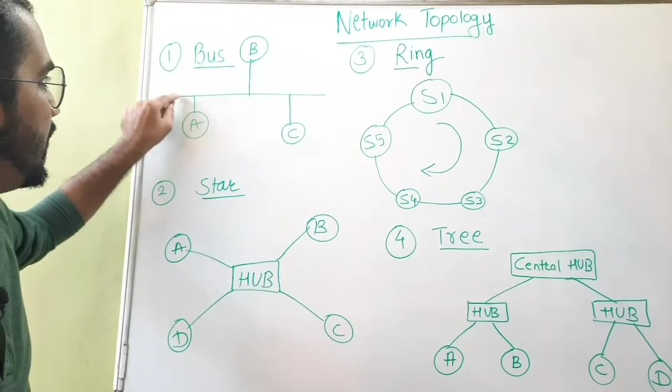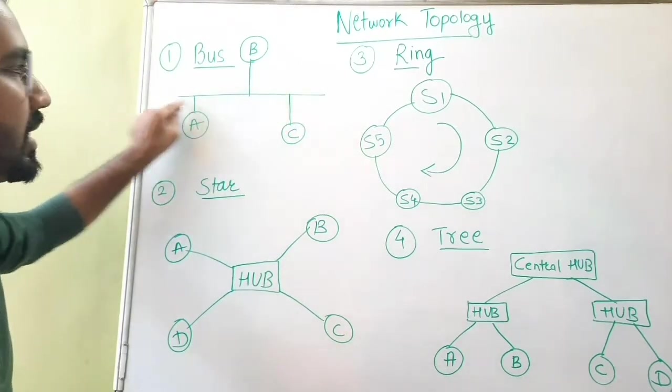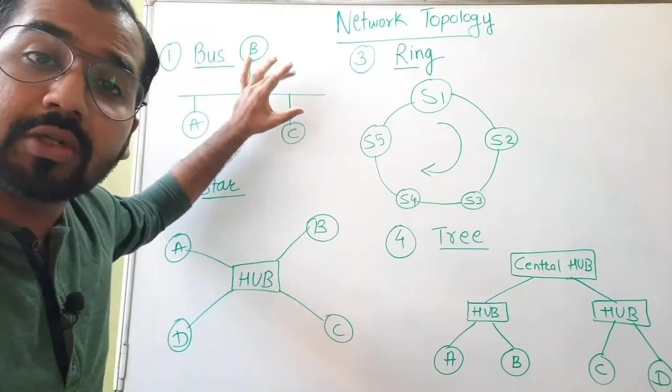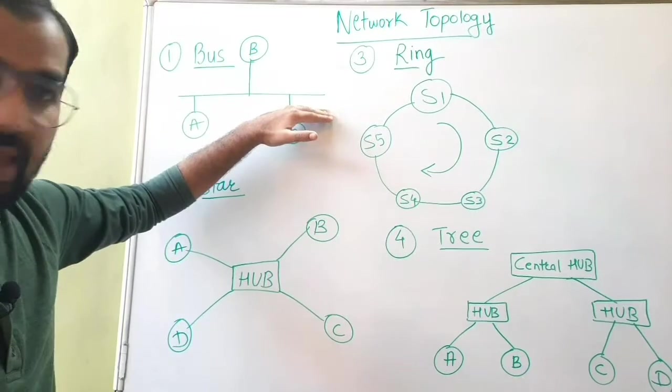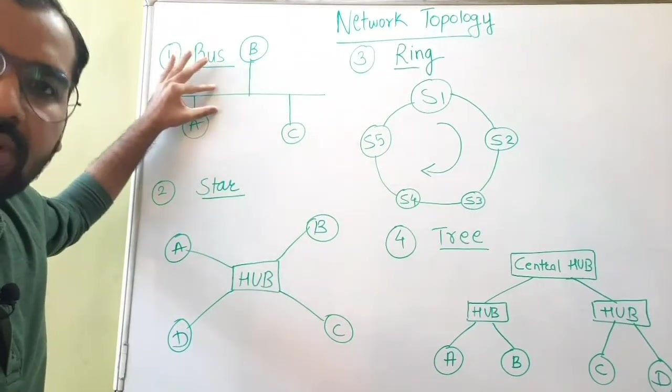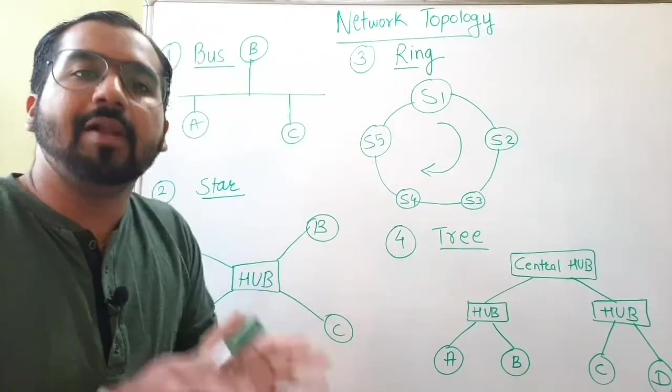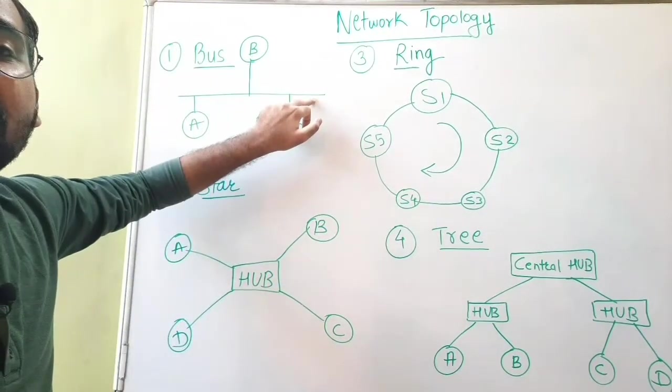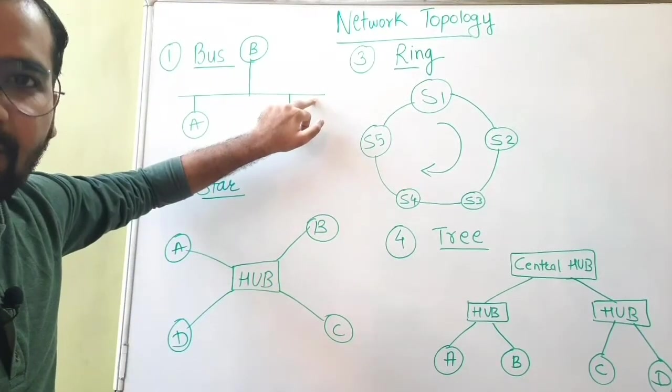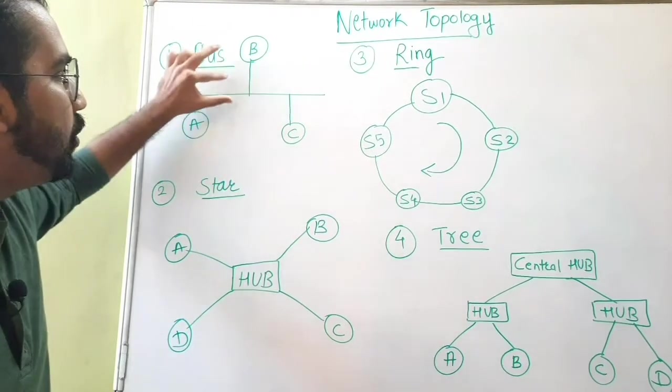Now in bus topology, as we can see, there is only one single cable that you can see. This cable is also called as a backbone cable. If anything happens to this backbone cable, the whole network will collapse, will crash, because this is a backbone of your system or your network.